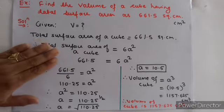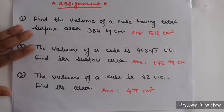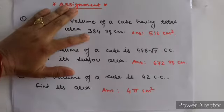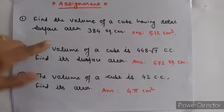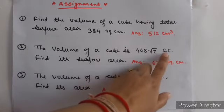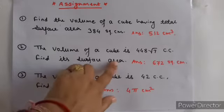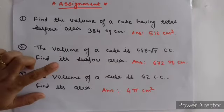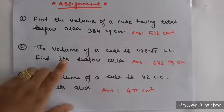तो इस तरह के से अब मैं आपको assignment दे रही हूँ जो आपको solve करने हैं. यह assignment है: देखिए, यहाँ find the volume, if total surface area is 384 square centimeter — अभी जैसे solve किया वैसे ही करना है. Next question में: the volume of a cube is given (cubic centimeter), find its total surface area. यहाँ हमें total surface area find करना है, तो formula 6a² का use होगा — लेकिन side given नहीं है, given है volume.